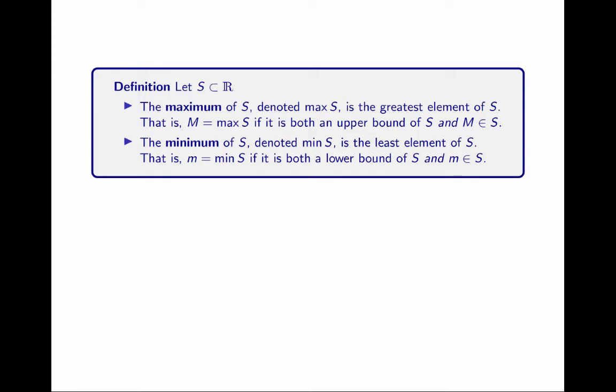A max and a minimum mean exactly what we think they mean. The maximum of a set is the greatest element in the set. Big M is a maximum of S if it's both an upper bound and in the set. A minimum is both a lower bound of a set and in the set. So, a few examples: the finite set of integers 1 through 10.